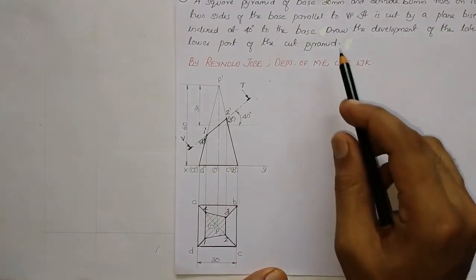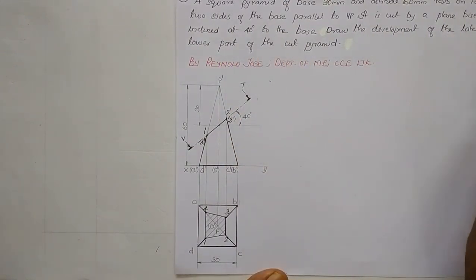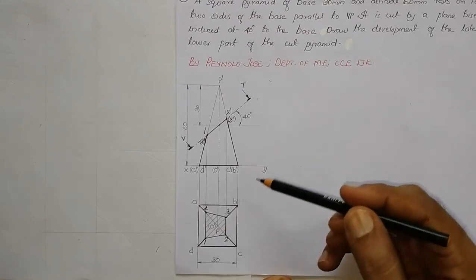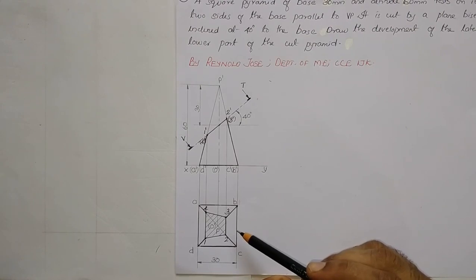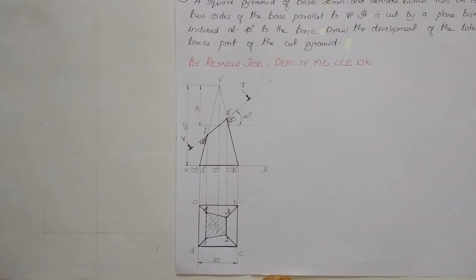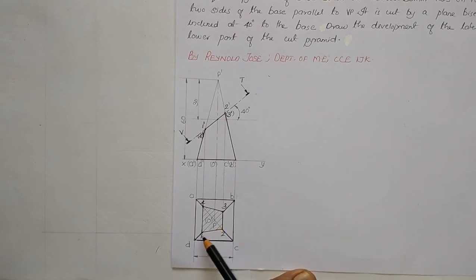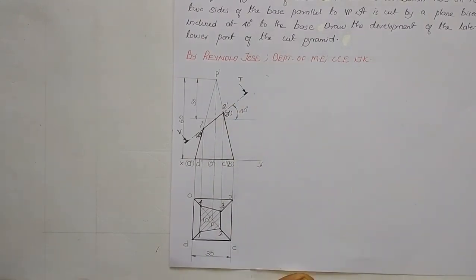Now we draw the development of the lateral surface of the lower part of the cut pyramid. Only the development of the lateral surface is required — that means only the 4 triangular faces, not the square base. To draw the lateral surface development we need the true length of the slanting edge. Since edges PD, PA, PB, PC are all inclined to the XY line, the true length cannot be read directly from the front view or top view, so we must follow a construction procedure.